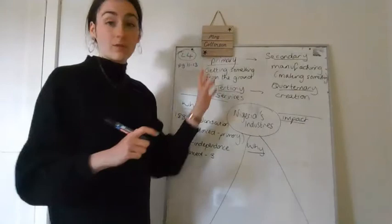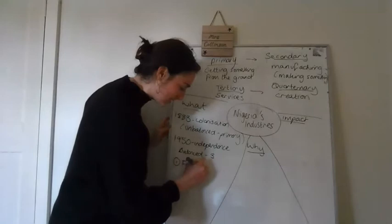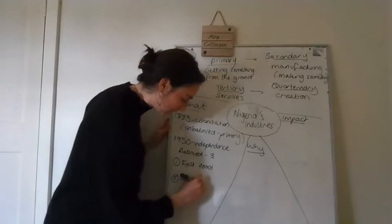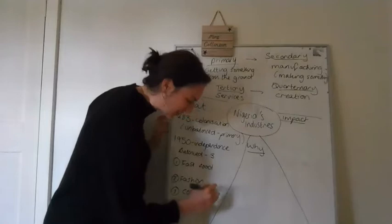The main industries that it now relies on is three main industries. It's got one, fast food. The second one is fashion. So they do lots of fashion design, which we've mentioned before. And the last one is cosmetics. So cosmetics includes makeup, and it also includes like shampoos, soaps, things like that.